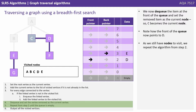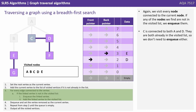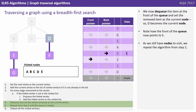As we still have nodes to visit, we repeat the algorithm from step 2. We add the current node to the list of visited nodes if it's not already in the list. We find that C is already in the visited list, so we don't need to do anything. Again, we visit every node connected to the current node, and if any of the nodes we find are not in the visited list, we enqueue them. C is connected to both A and D, and they're both already in the visited list, so we don't need to enqueue either.